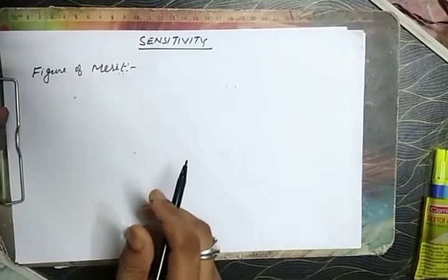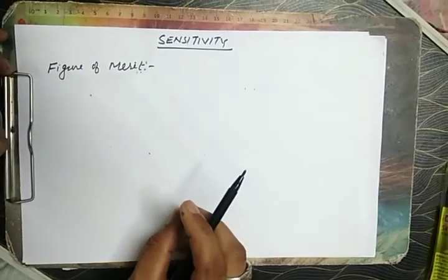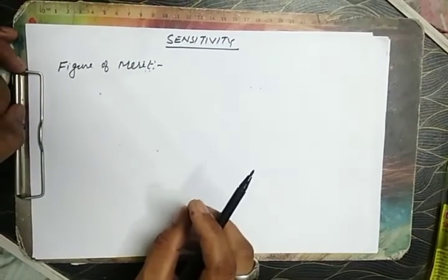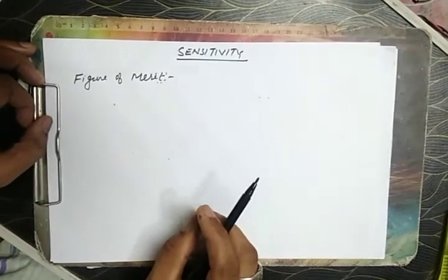What is figure of merit? Figure of merit is the amount of current required to give one unit of deflection in a galvanometer.